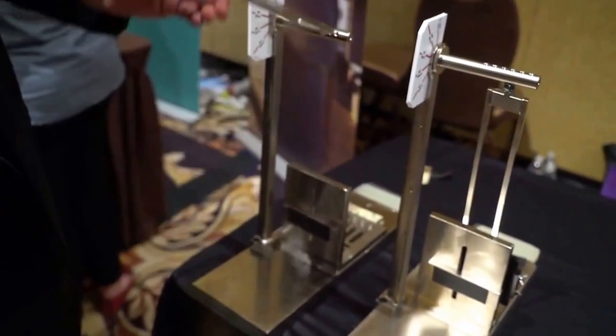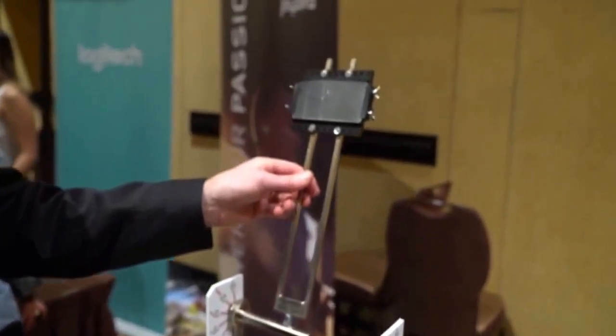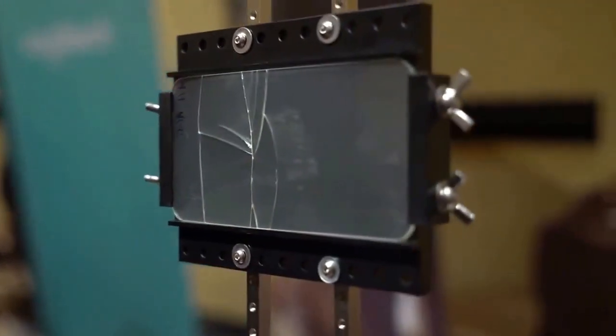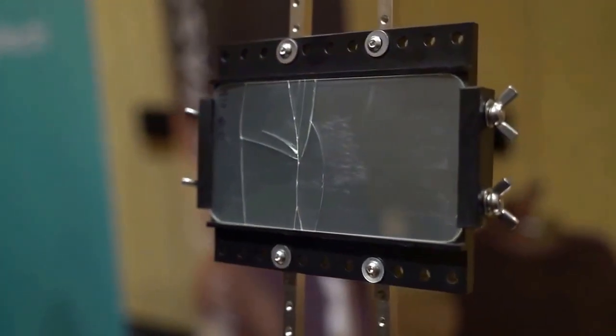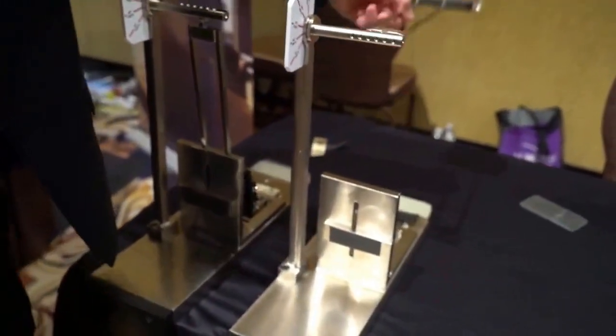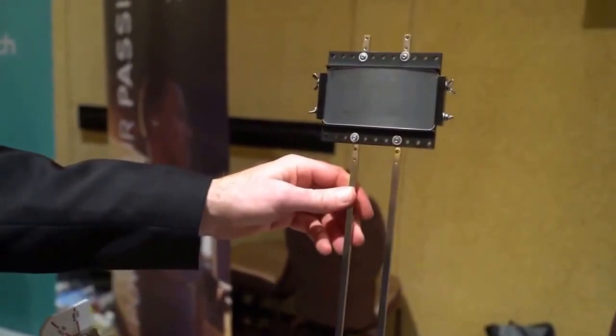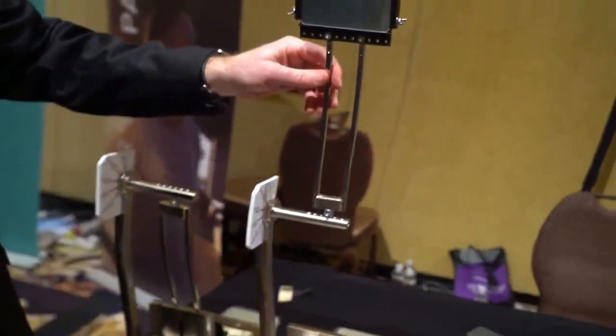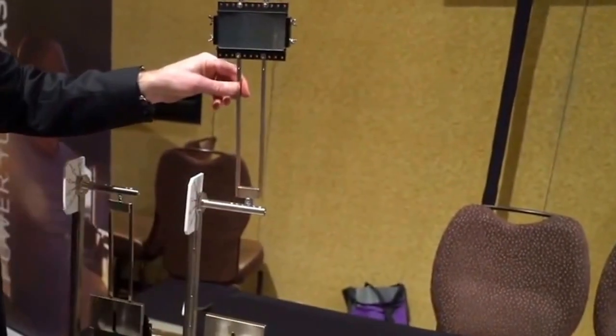You can see that sample is broken. Now we'll take Corning Gorilla Glass 5, mounted in the same way with the same sandpaper. We'll go all the way up to the max height that this pendulum can handle, which simulates about selfie height, and we'll drop that.